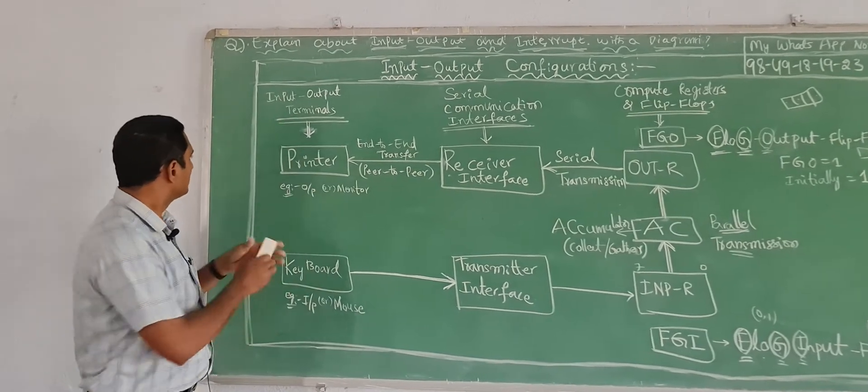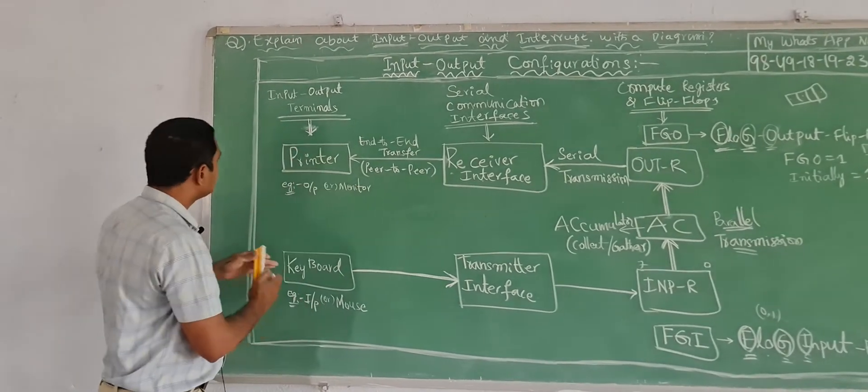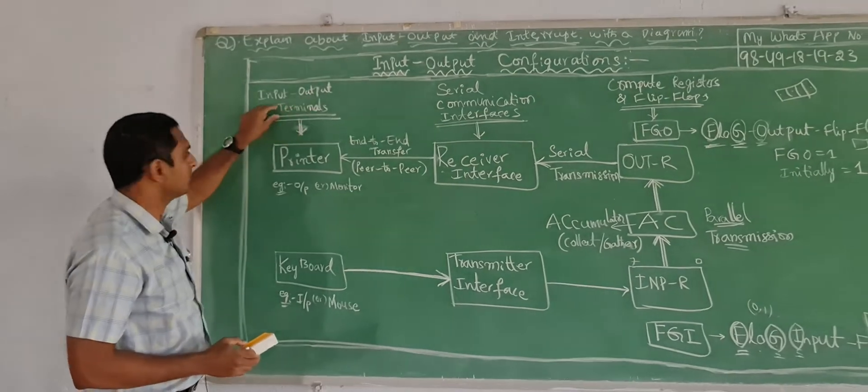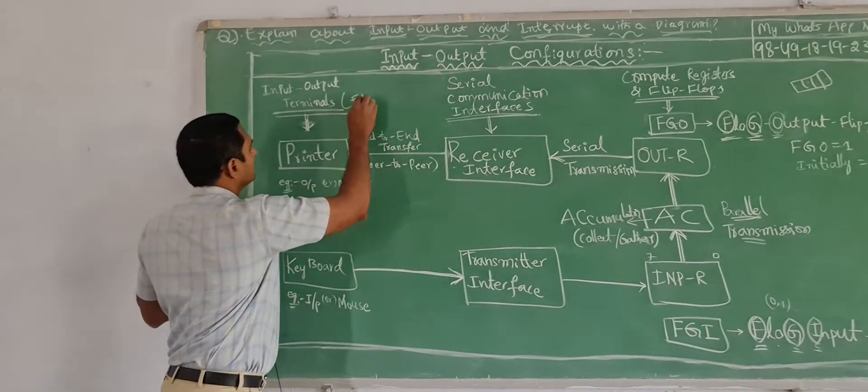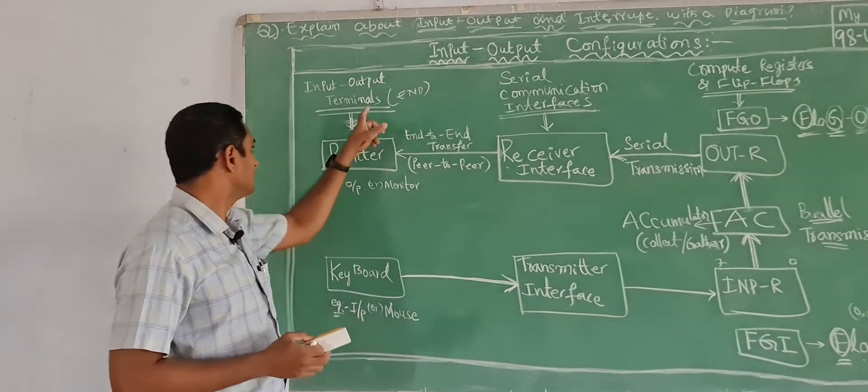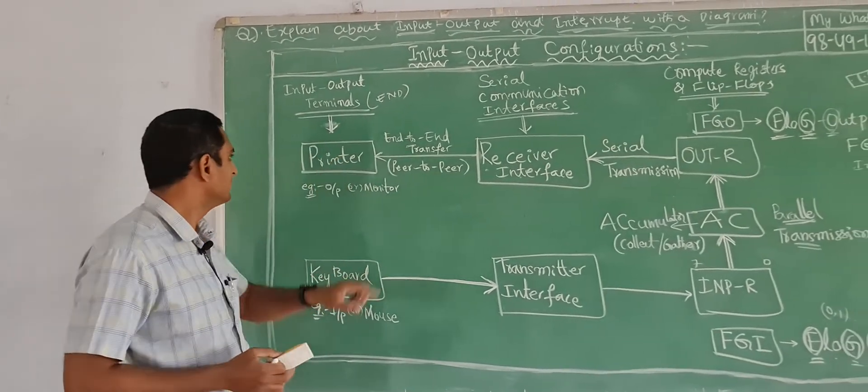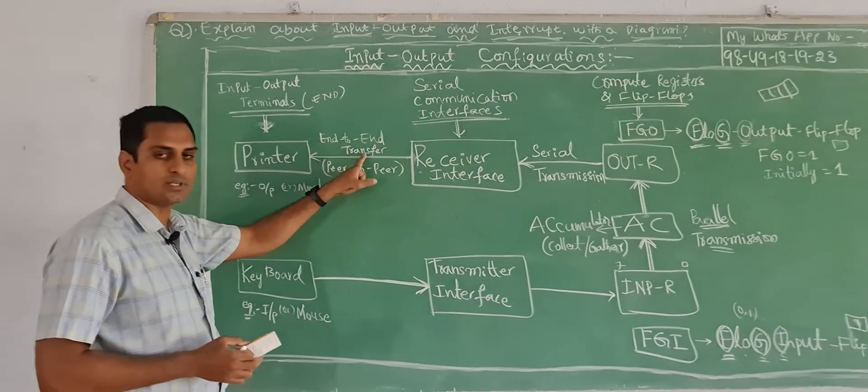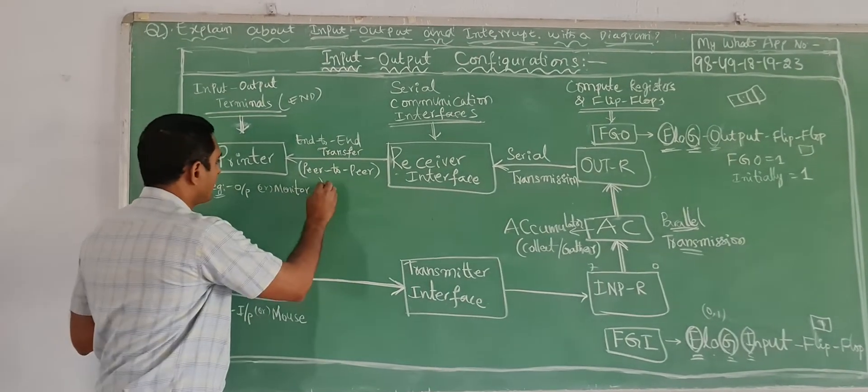So here this area is called input output terminals. Terminal means end points. We cannot connect any other device to it, that is called terminal, terminator end. Here end to end transfer, peer to peer, peer means also end points.